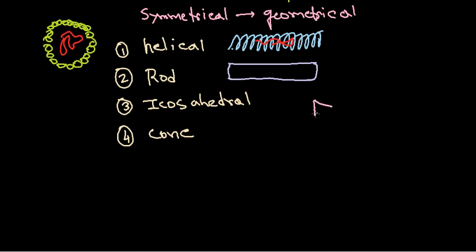If I draw the icosahedral structure it will look something like this. It is a pretty challenging structure to draw carefully. This is a kind of icosahedral structure. If I draw it enlarged you can see how the structure is arranged. This is a kind of icosahedral symmetrical structure — you can see how geometrical it is. This is really beautiful.